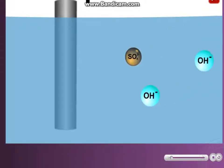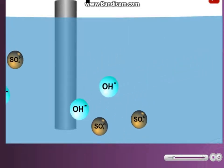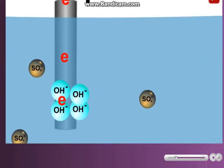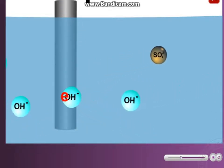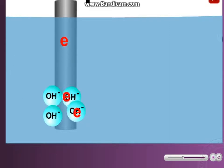There are two ions attracted to the anode: hydroxide ions and sulfate ions. Only one will be discharged. In this case, the hydroxide ions are selectively discharged.